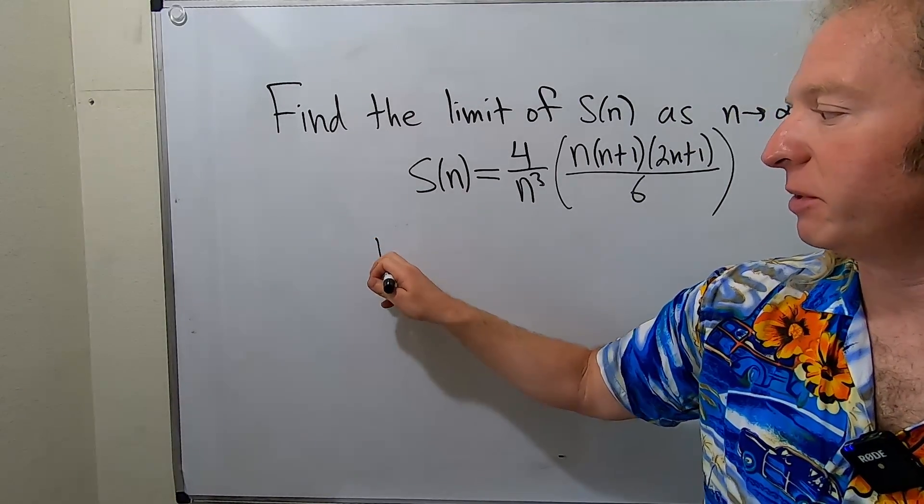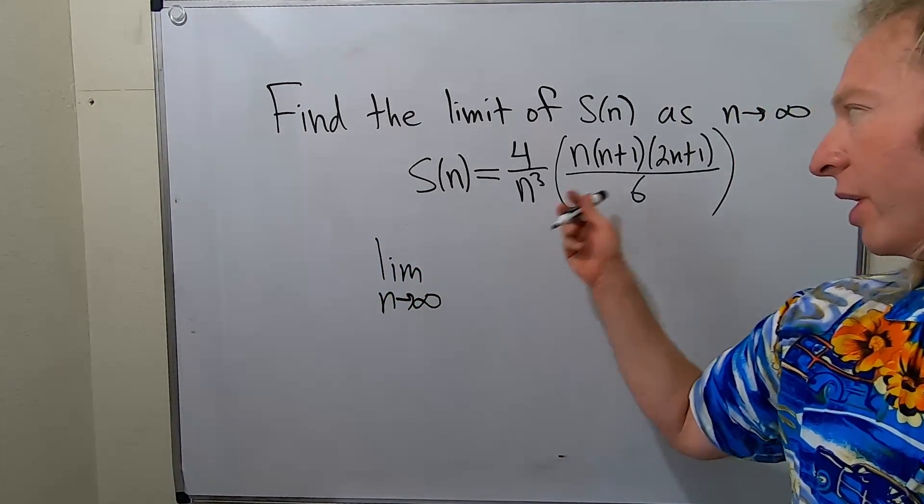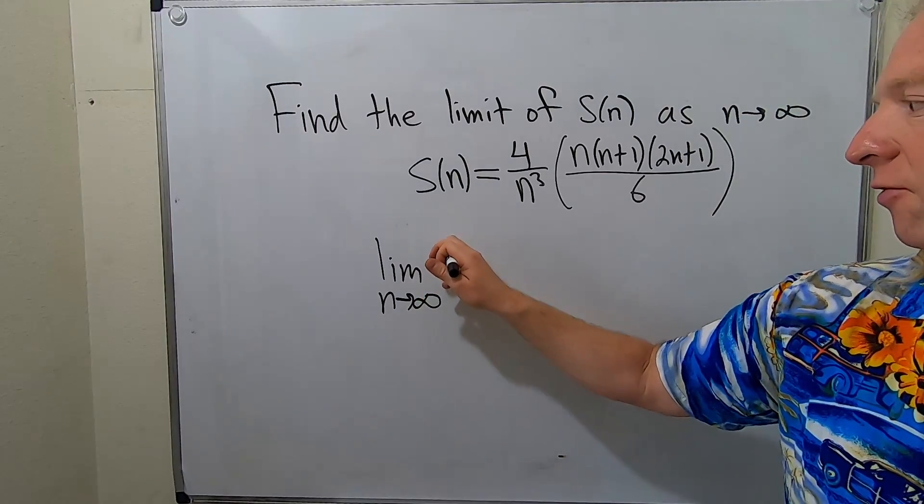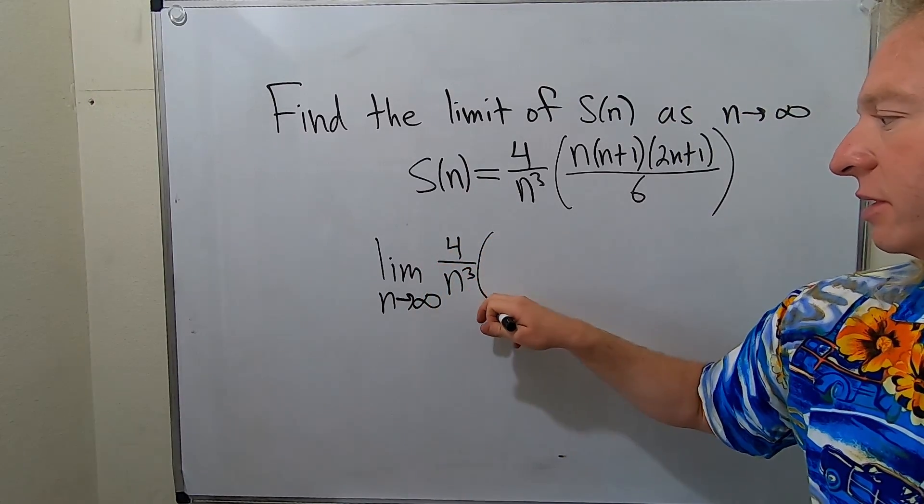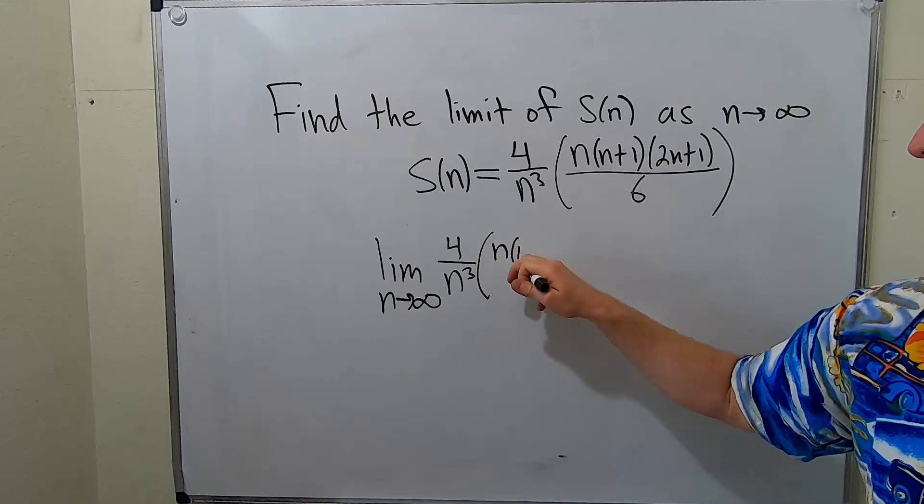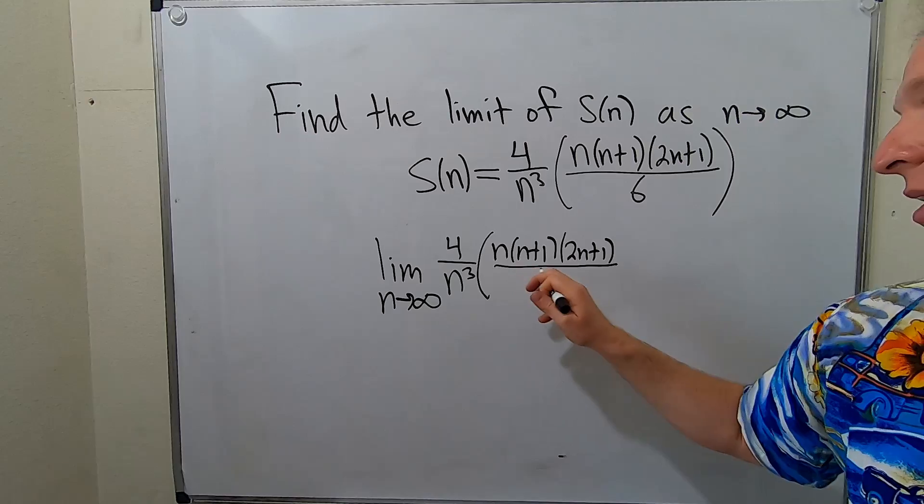So let me go ahead and write the limit sign. Limit as n goes to infinity. And I'm just going to rewrite what's here. So we have 4 over n cubed, and then in parentheses we have n, n plus 1, 2n plus 1, and it's all being divided by 6.